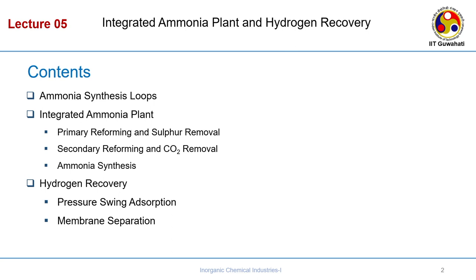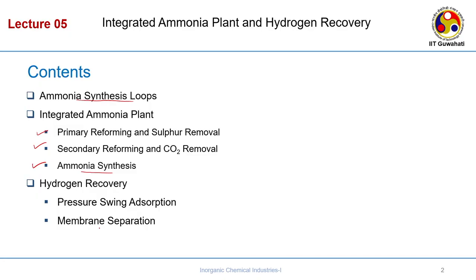What we will cover is the ammonia synthesis loops available, then the integrated ammonia plant covering several processes: primary reforming and sulphur removal, secondary reforming and carbon dioxide removal, and then the final ammonia synthesis. We will see how the streams are connected and integrated. Hydrogen recovery comes last. In this ammonia plant, a lot of hydrogen is generated because most of the ammonia is generated from natural gas, which has more hydrogen. This hydrogen needs to be recirculated, and before recirculation it needs to be adsorbed — using pressure swing adsorption and membrane separation.